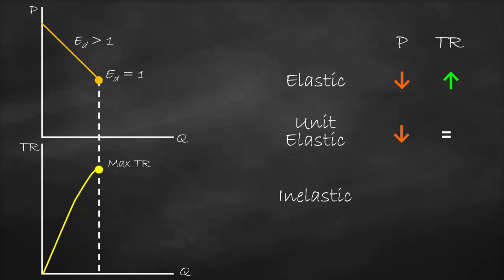Then we have inelastic demand. Inelastic means we have a positive relationship between price and total revenue — price and total revenue move in the same direction. If price goes down, total revenue will go down. At a lower price the product is relatively inelastic, with price elasticity of demand less than one, so total revenue will decrease.